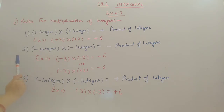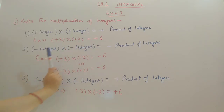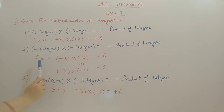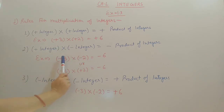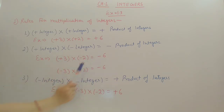Second rule: when one integer is positive and another integer is negative, you have to do the product of these two integers and the symbol will come minus. Plus and minus will become minus. For example, plus 3 multiplied by minus 2 — the answer will be minus 6. Plus and minus become minus, and 3 into 2 becomes 6.